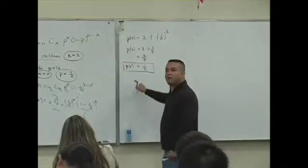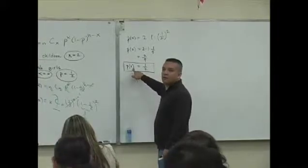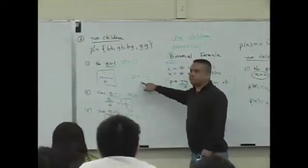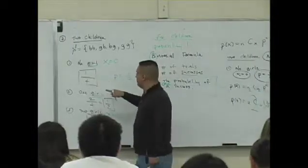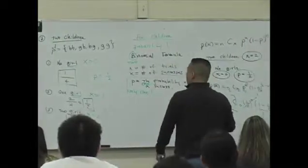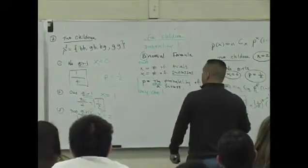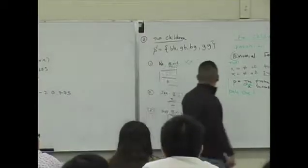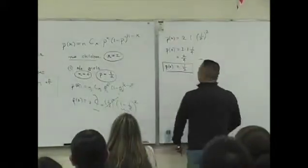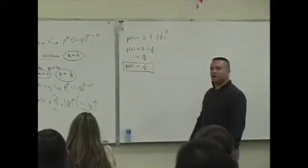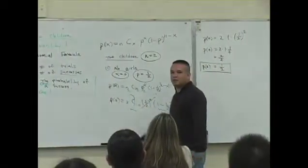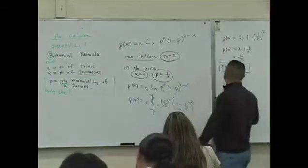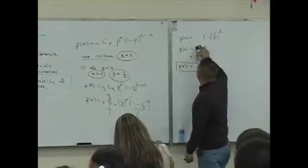Meaning the probability of having no girls is 1/2. Wait, hold on. What happened? Oh I know - 2C0 is not 2, it's 1. That's scary. It's 1.